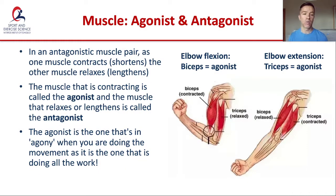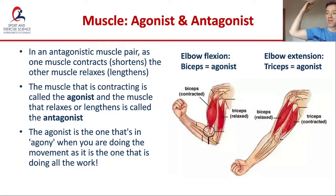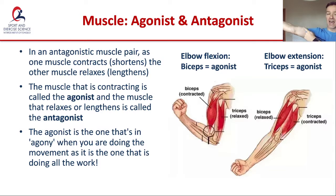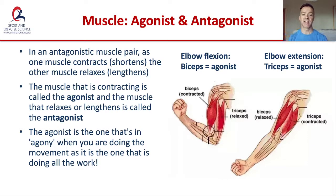In the antagonistic pair, one muscle is called the agonist and the other is called the antagonist. One muscle contracts to create movement while the other muscle relaxes and lengthens. In elbow flexion, as I flex my bicep, my tricep is relaxing and lengthening. As I contract my tricep, my bicep is relaxing and lengthening. The muscle contracting to create the movement is the agonist; the opposing muscle that relaxes and lengthens is the antagonist. An easy memory aid: if you repeated a movement, the agonist is the muscle that would be in agony — it tires and gets sore.